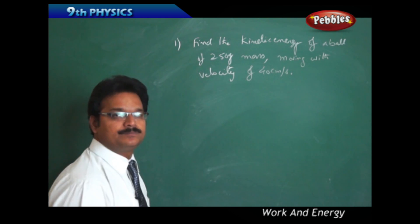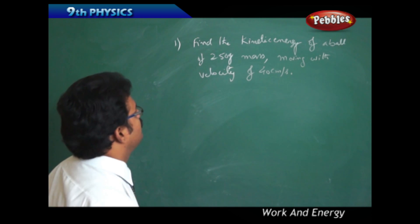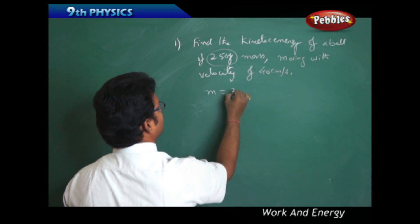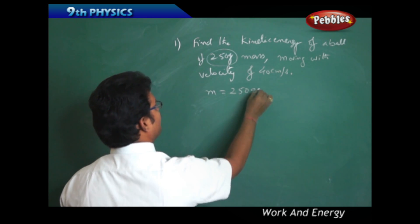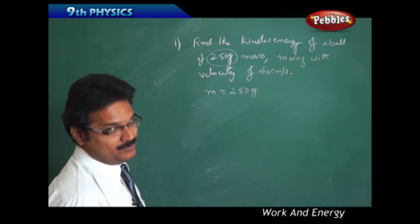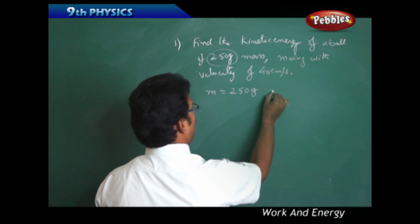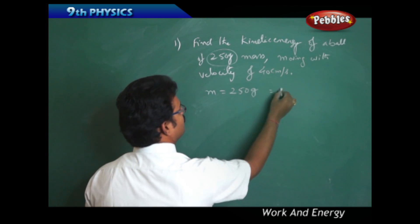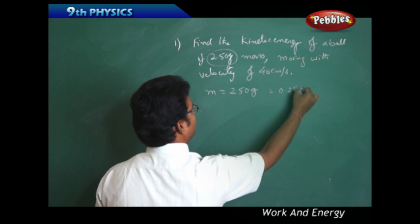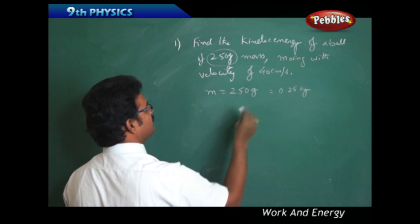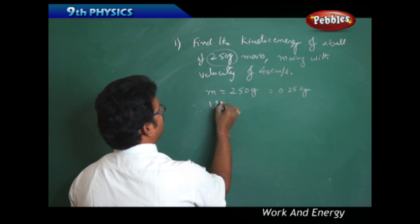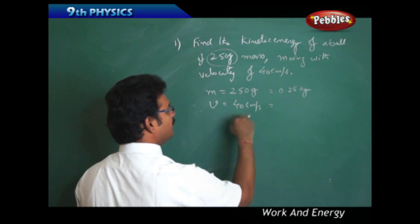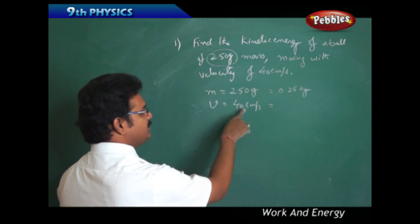First thing is the mass: 250 grams. Whenever writing 250 grams, immediately convert into SI system - make a habit. So divide 250 by thousand, then you'll get 0.25 kg. Next, velocity V = 40 centimeters per second. Convert to SI system: 1 centimeter equals 10^-2 meters, or divide by hundred, then you get 0.4 meters per second.